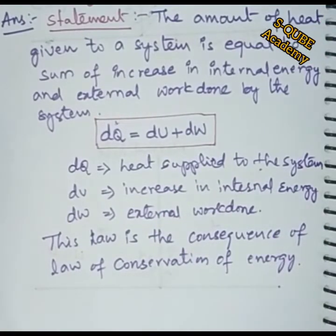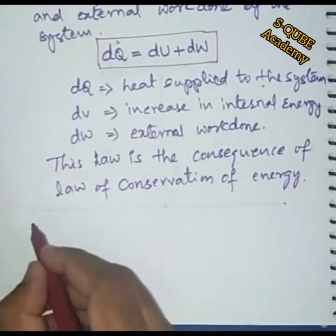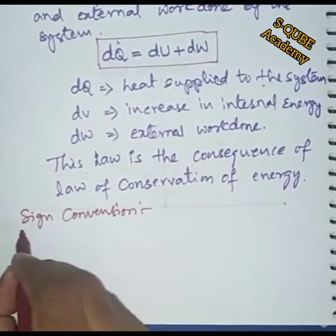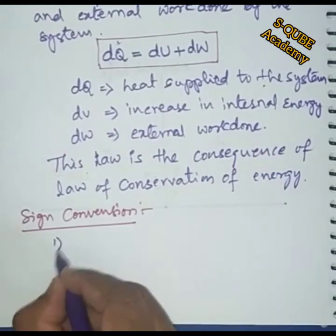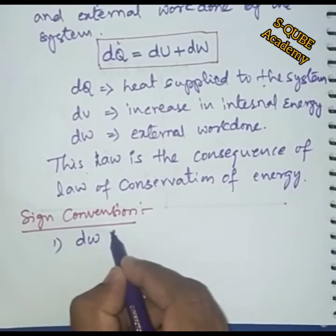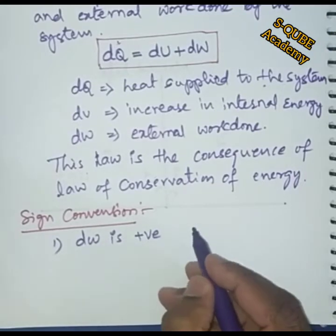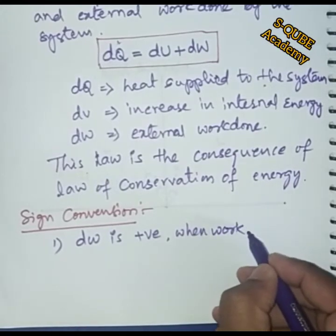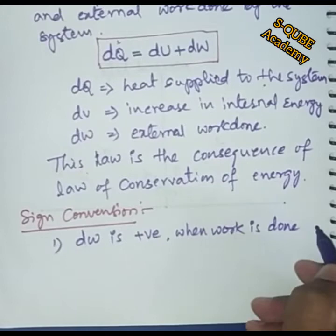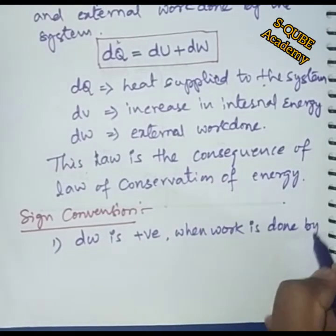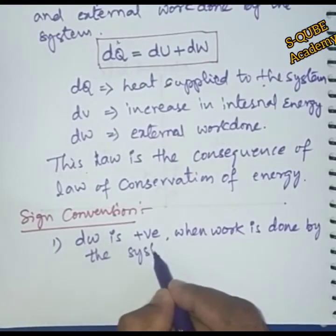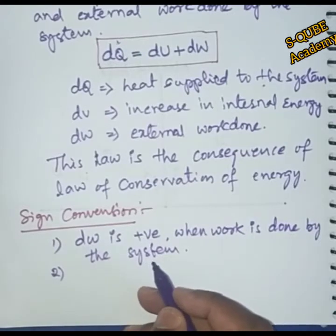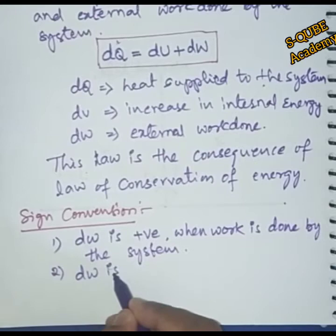Now, sign convention. The first one: DW is positive when work is done by the system. So, work done by the system is positive, and DW is negative when work is done on the system.